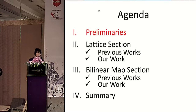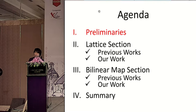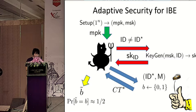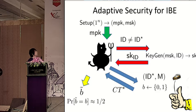The agenda is as follows. We have the preliminaries — for those who are not familiar with lattices, it's okay because we also have the bilinear map setting, and vice versa. Before anything, I want to explain what adaptive security for IBE is, and I'll go over it quickly since it's been discussed in this session.